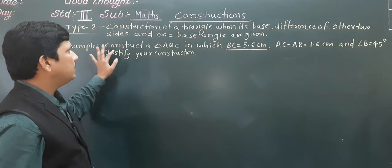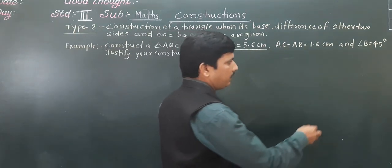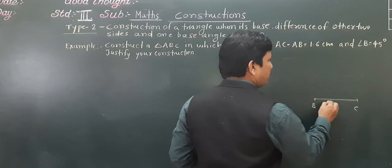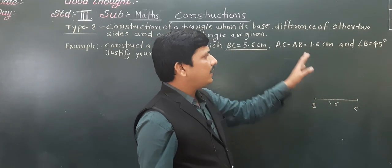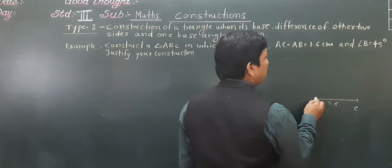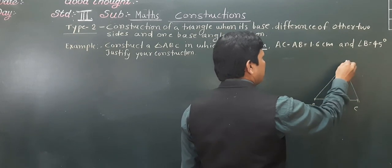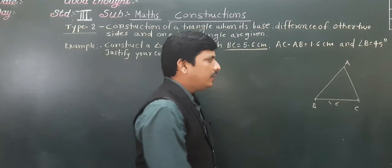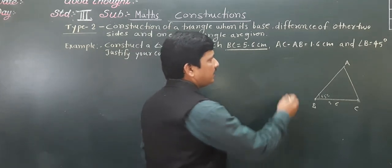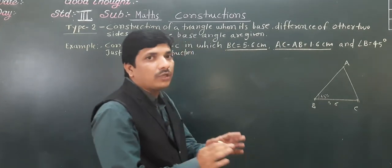Here, one example is given: construction of triangle ABC in which BC is equal to 5.6 centimeter. If you take a rough sketch, BC is equal to 5.6 centimeter — the base is given. AC minus AB is given as 1.6 centimeter and angle B is given as 45 degrees. So angle B you will take as 45 degrees, and somewhere a triangle you will get, with this point as A. This is an important thing — on this depends which of the two types to use.